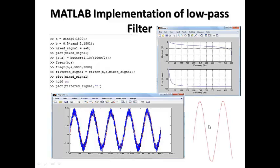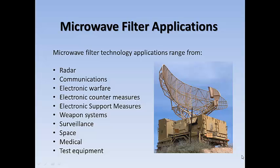Now we will discuss some microwave filter applications — where they are used and what they are used for. Microwave filter technology applications range from radar, communication, electronic warfare, electronic countermeasures, and electronic support measures. They are used in weapon systems for surveillance operations, in space, for medical reasons, and for test equipment. There is an example on the right-hand side which is a radar, and we will talk more about this in the next slide.